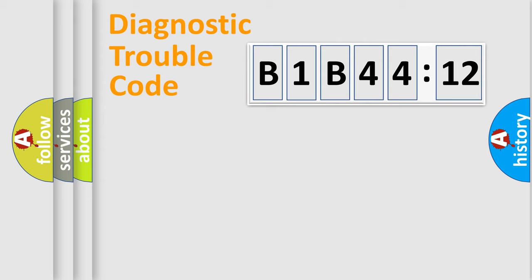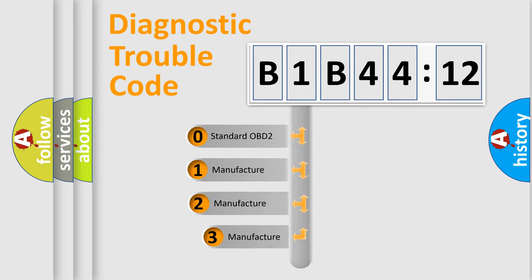Powertrain, Body, Chassis, Network. This distribution is defined in the first character code.